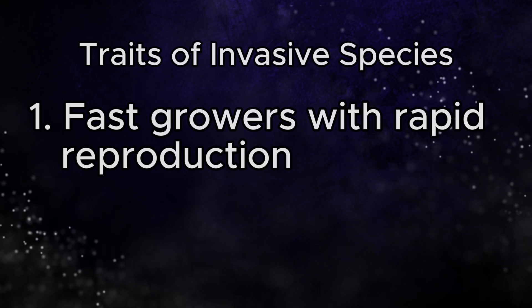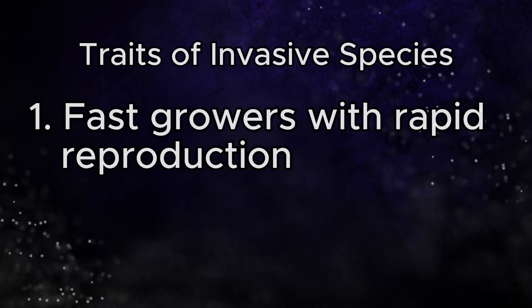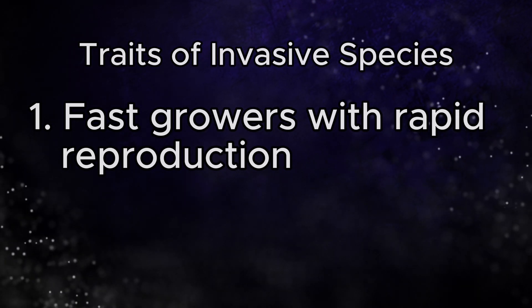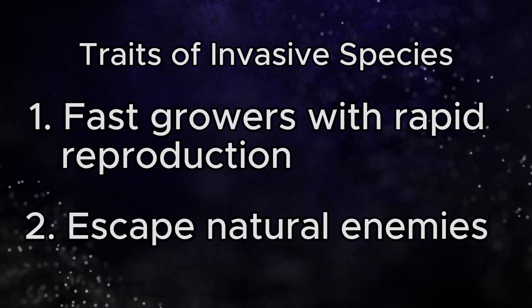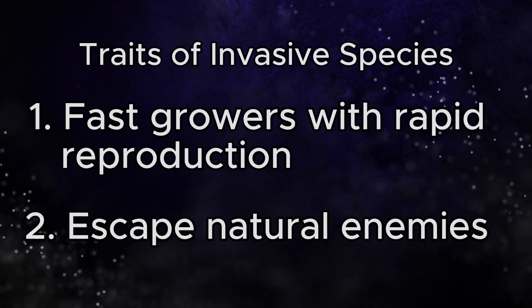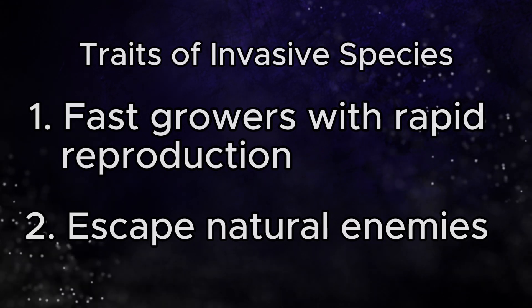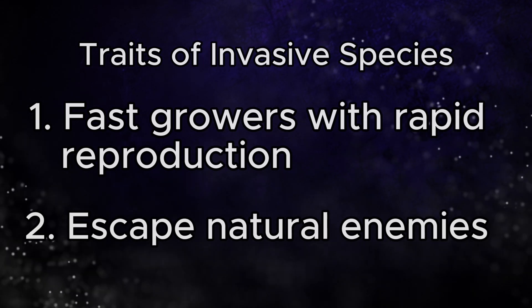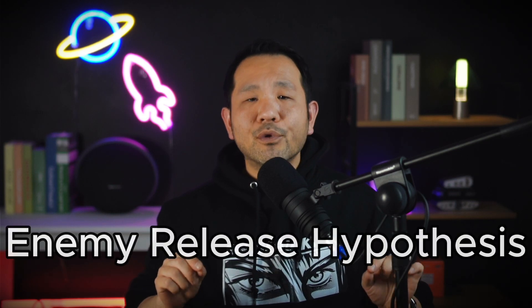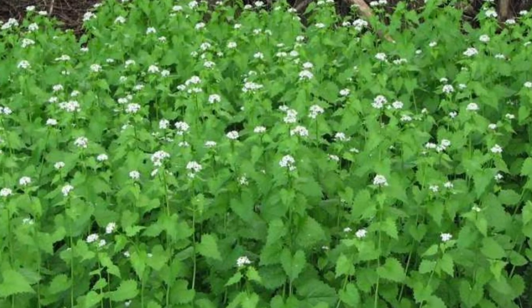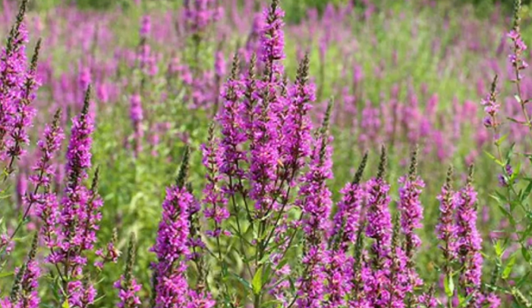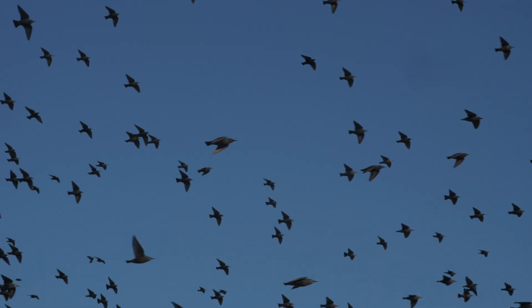Scientists have identified certain traits that explain why invasive species are so successful in their new environment. First, invasive species tend to be fast growers with rapid reproduction, allowing them to be very opportunistic — taking over areas before native species can set their roots. Secondly, invasive species tend to escape their native predators or herbivores as they move to a new area. This idea, called the enemy release hypothesis, is thought to have a big impact on the success of invaders. Common examples include plants like garlic mustard and purple loosestrife, while animal examples include the European starling, which has become quite a problem in eastern North America.